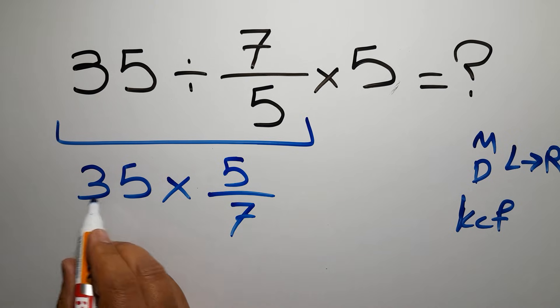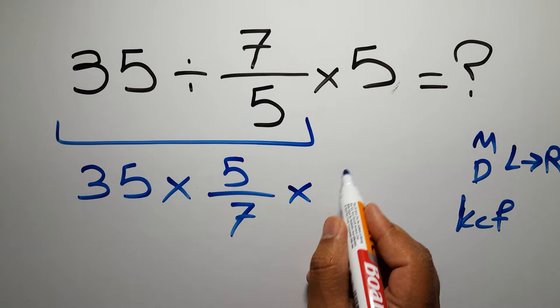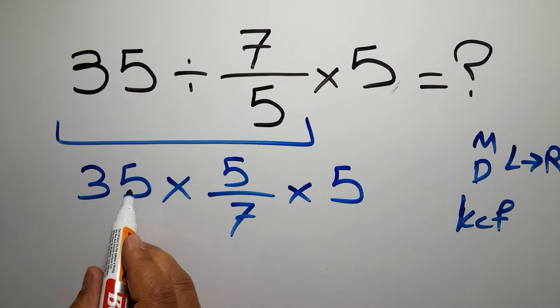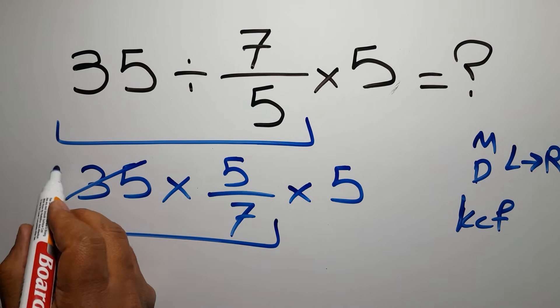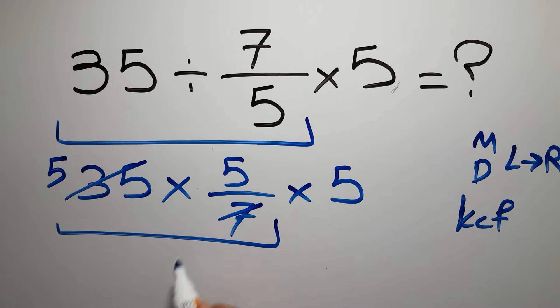So 35 times 5 over 7, then times 5. Okay, 35 times 5 over 7. 35 divided by 7 gives us 5, and 7 divided by 7 is just 1.